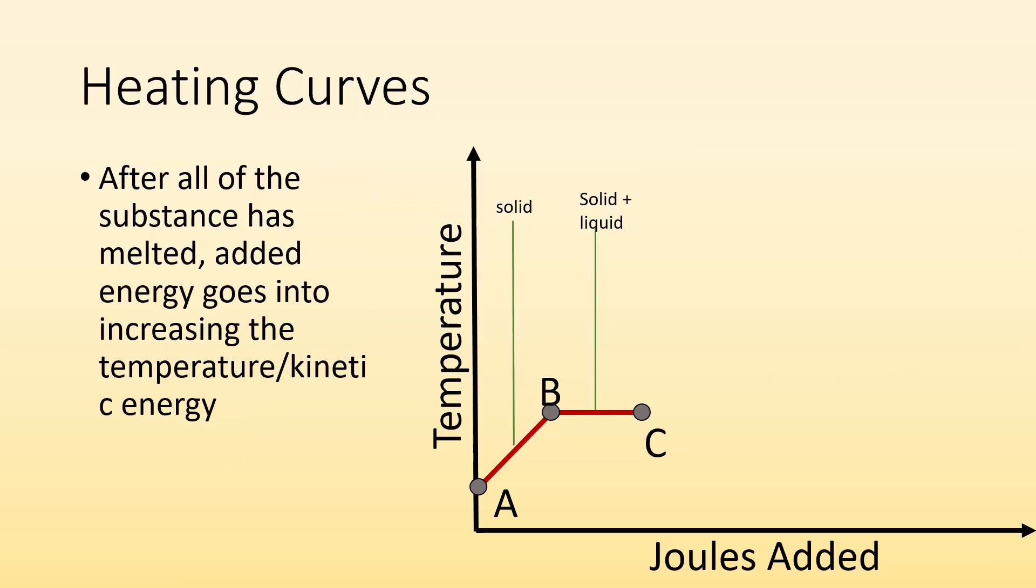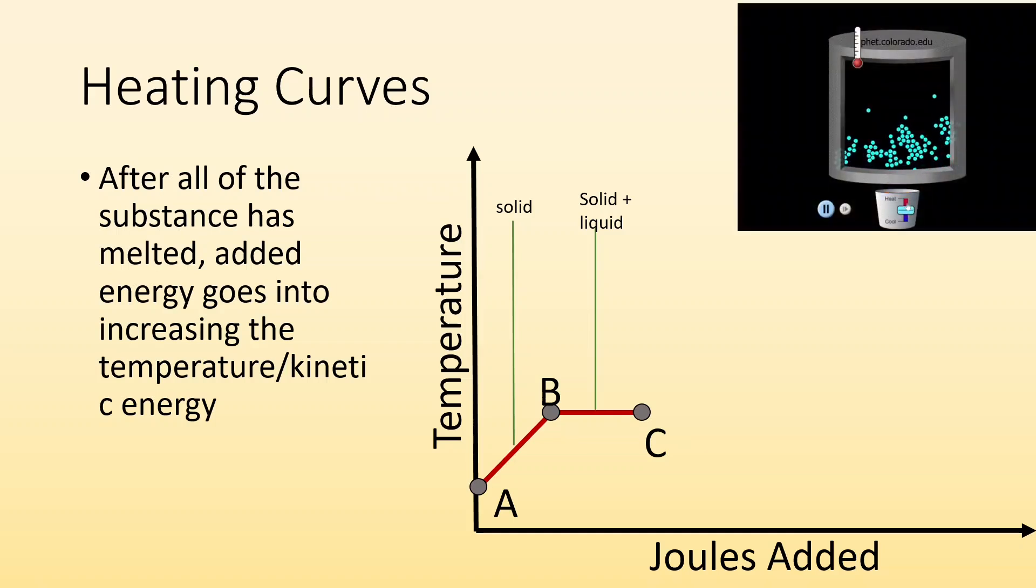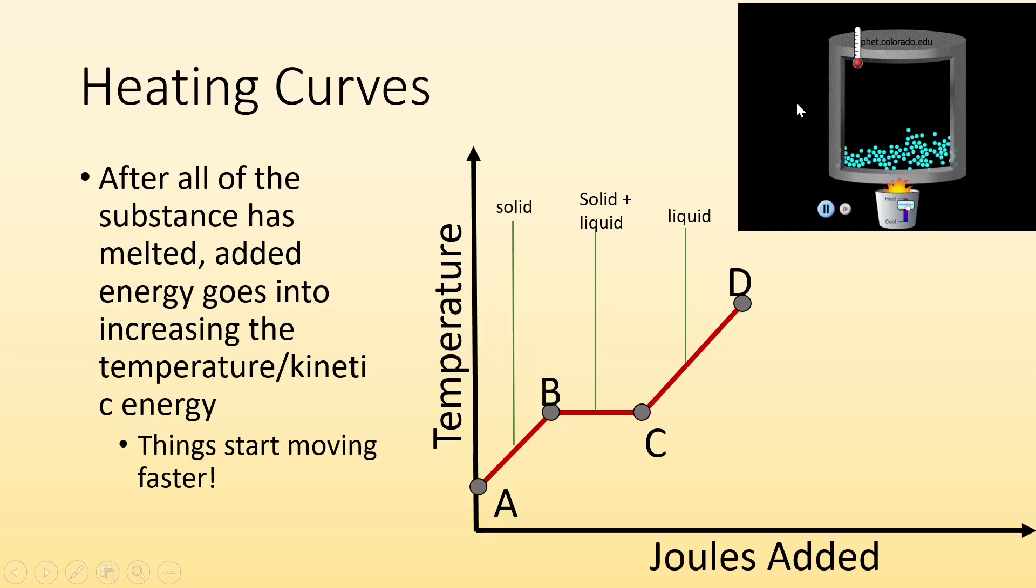So after all the substance has been melted and everything's in the liquid phase, energy added to it will now increase the temperature slash kinetic energy, right? Because temperature is a measure of kinetic energy. So we keep adding more heat and they'll start moving around more. They'll increase their kinetic energy. So things start moving faster and the temperature will go up. Now, just like in the solid state, it'll go up until it reaches the phase change point. For this, it'll be the boiling point.